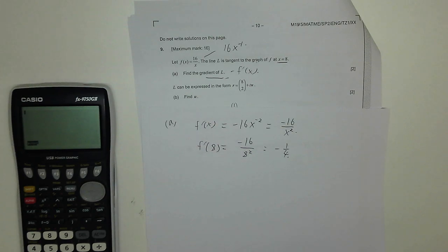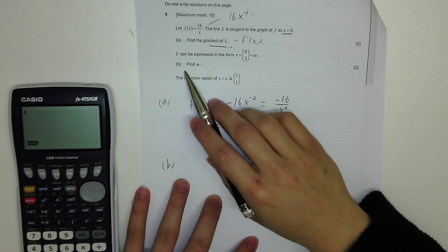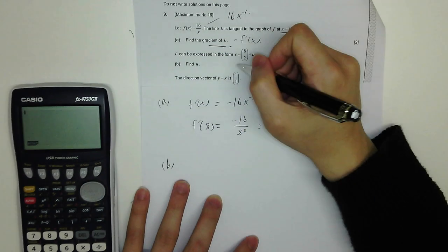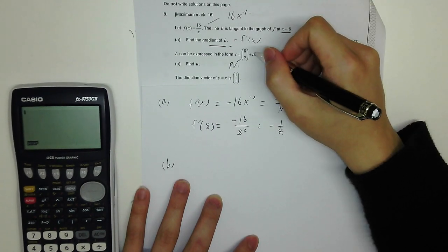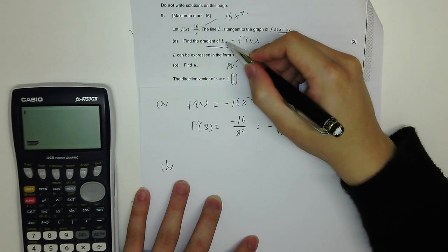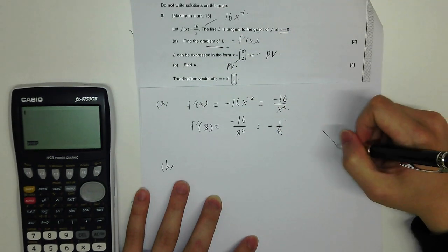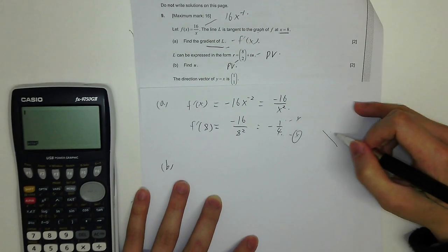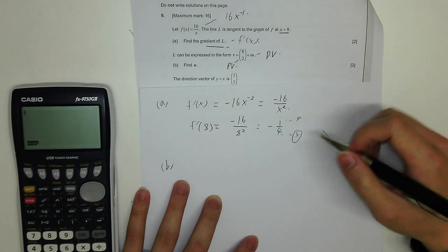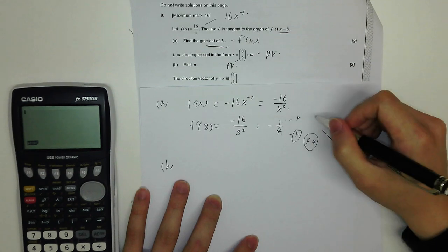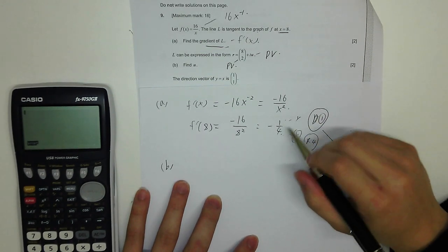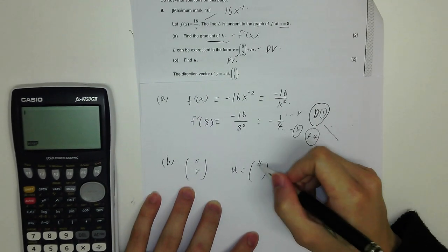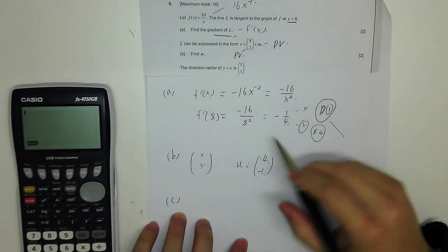Part B: L can be expressed in the form r = (8, 2) + t·u. Find u as the direction vector. The gradient is −1/4, meaning shift right 4 and down 1. So the direction vector u = (4, −1).